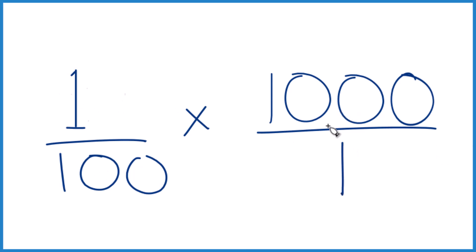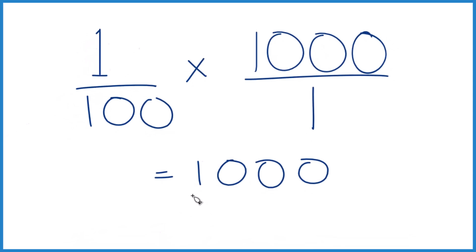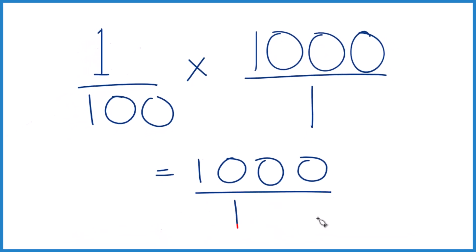So 1 times 1,000, that's 1,000. And 100 times 1, that is 100. So we divide. We can just cancel these zeros out like this, and we get 10 over 1. We end up with 10. Same answer as we got before. 1% of 1,000 is 10.